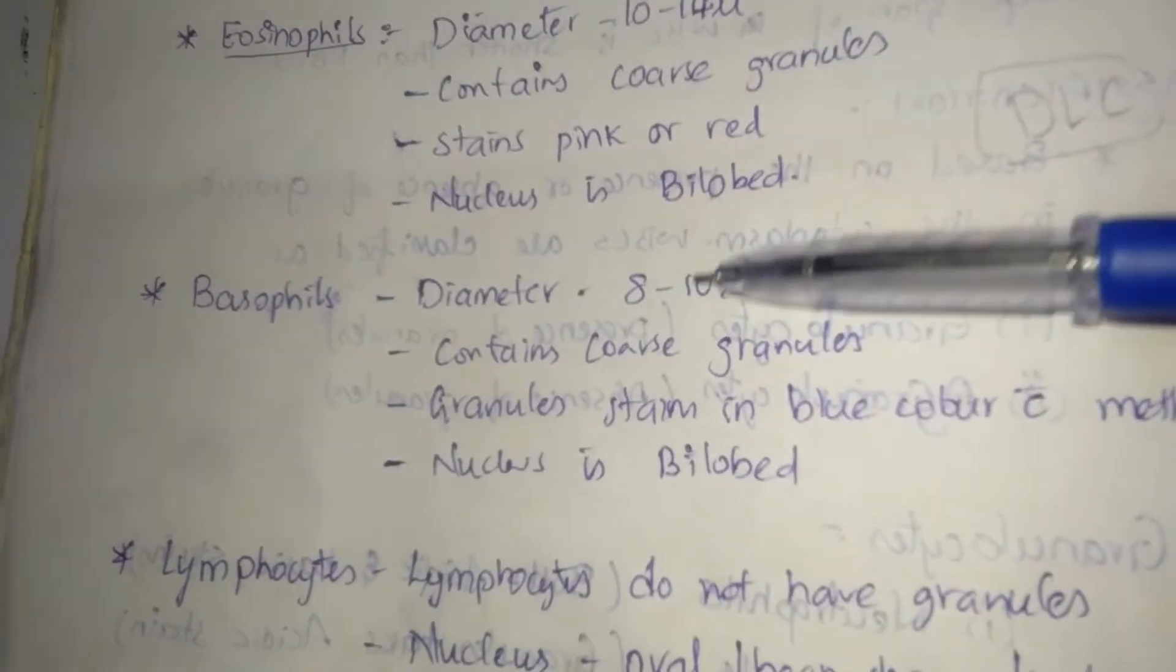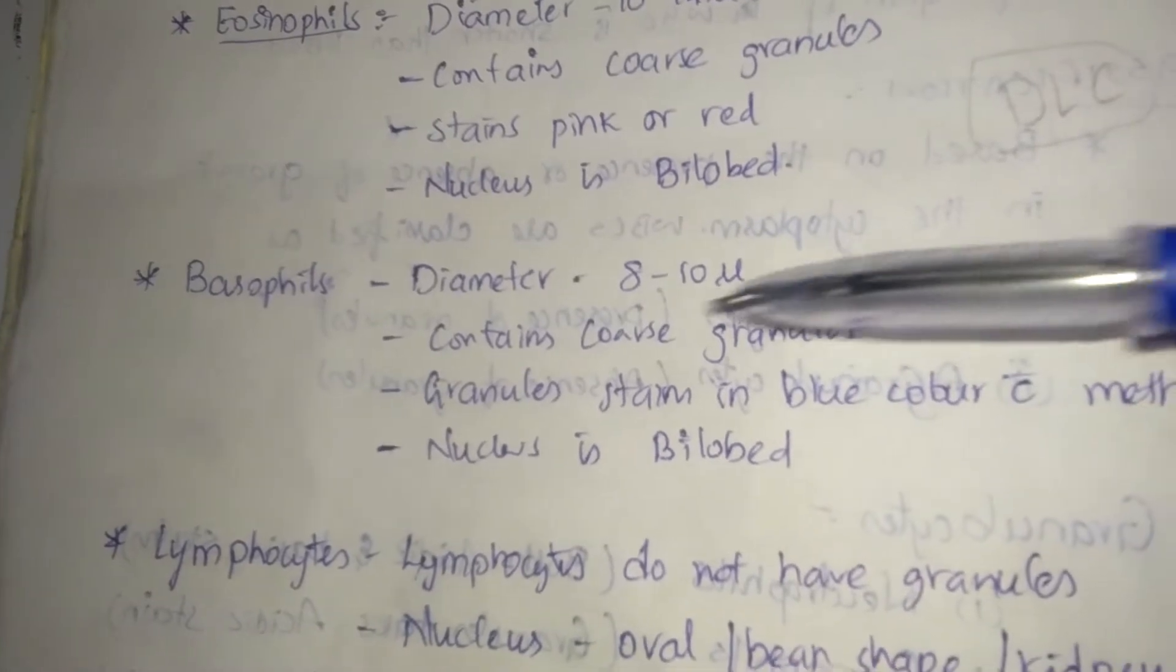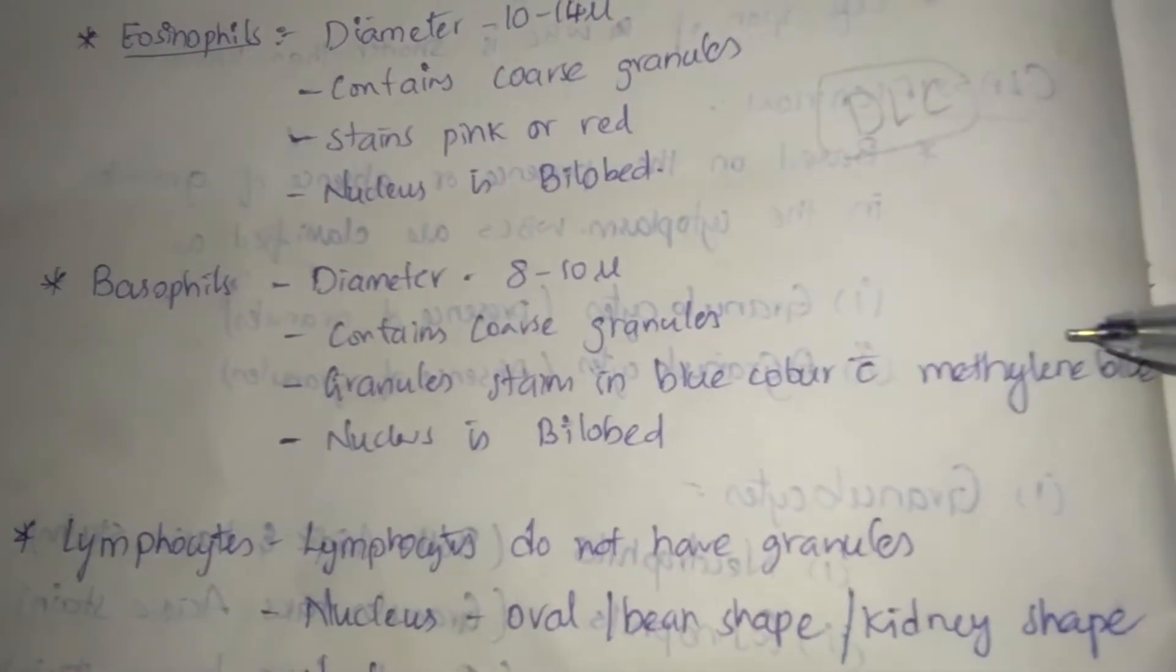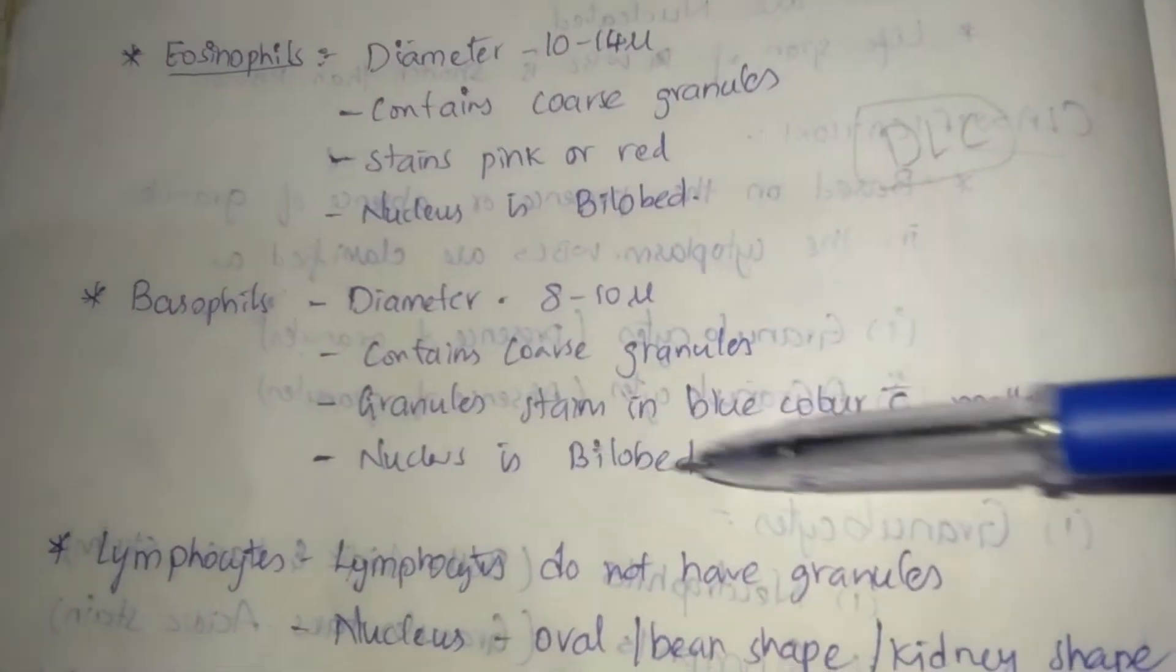Basophils: Diameter 8 to 10 microns, contains coarse granules, granules stain in blue color with methylene blue, nucleus is bi-lobed.